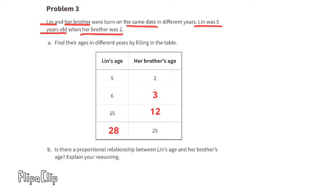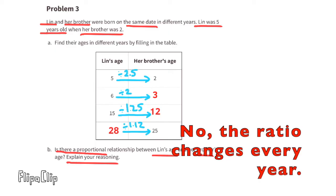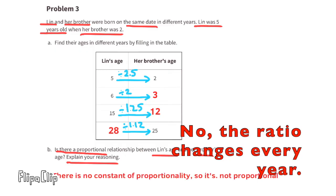Part b — is there a proportional relationship between Lynn's age and her brother's age? No, there is no proportional relationship between their ages, because every year they both get one year older and the ratio changes every year.